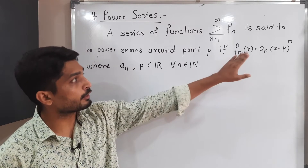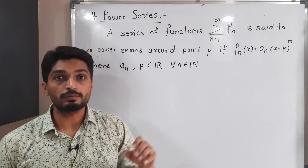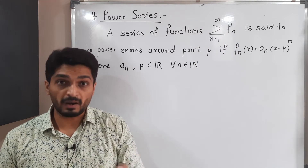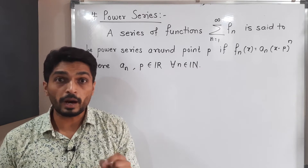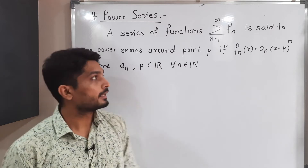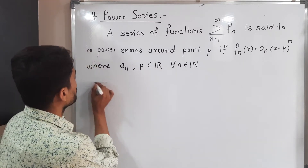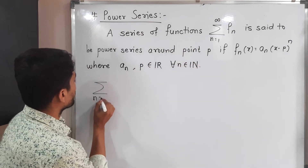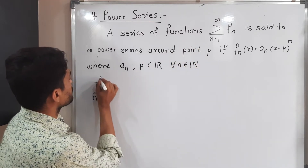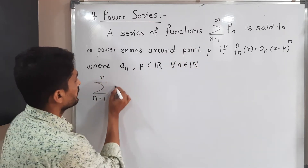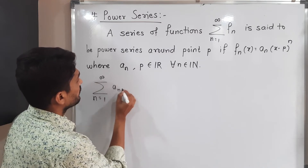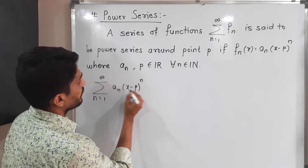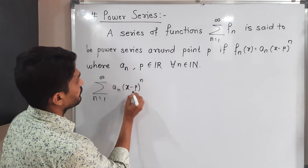Let us put the value of fn(x) into this series so we can easily understand why we call it a power series and why it is around point p. If you put the value of fn there, it will look like this: summation, n running from one to infinity, of aₙ times (x minus p) raised to n.